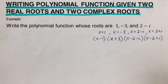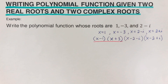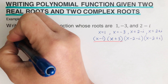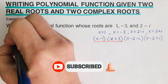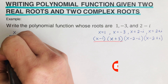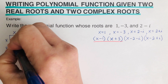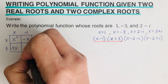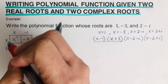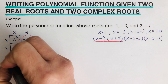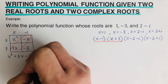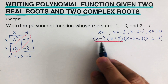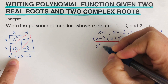Next we multiply all these factors. We start by multiplying the first two: (x - 1)(x + 3). Using the area model with a two-by-two box, we get x², 3x, -x, and -3. Combining like terms, 3x + (-x) = 2x, giving us x² + 2x - 3.